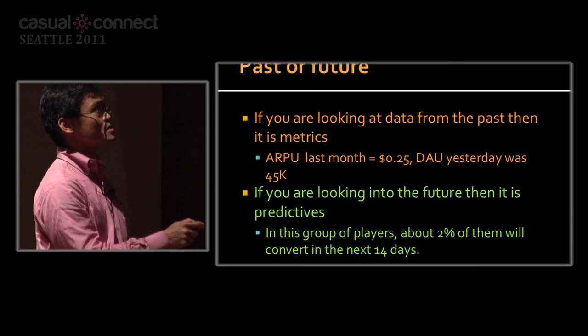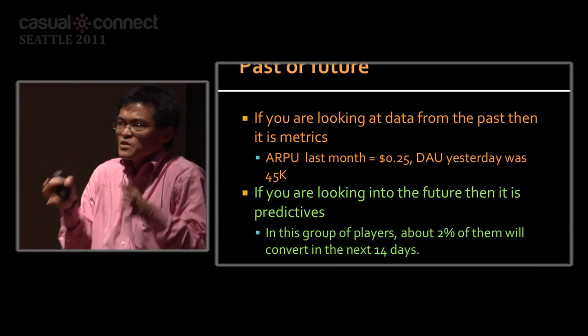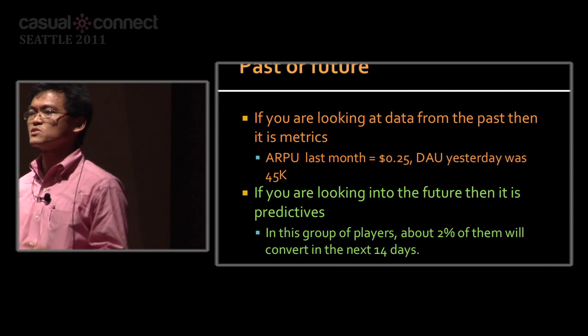Number two: can you be 100% sure of this number? If you can be very close to 100% sure, it's probably a metric. The server went down for 10 minutes — go check the server logs. But if you're guessing and cannot be sure, it's most likely a predictive. Maybe 2% of players are going to convert — are you sure? If you're only 30–40% sure, that's probably a predictive.